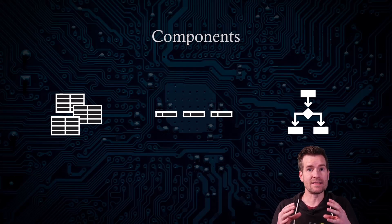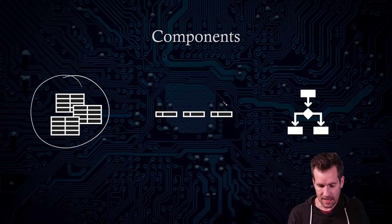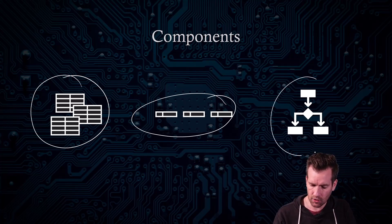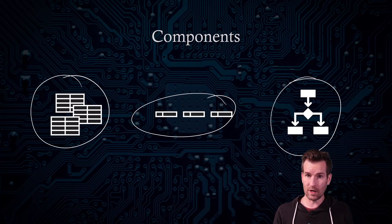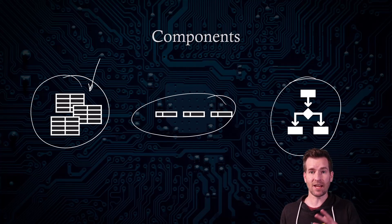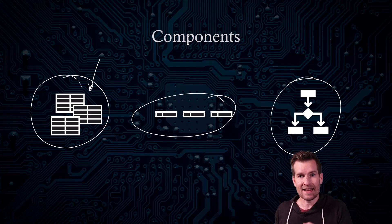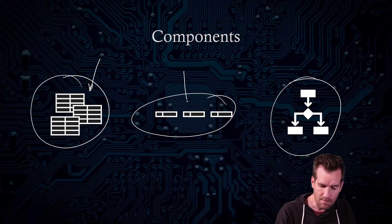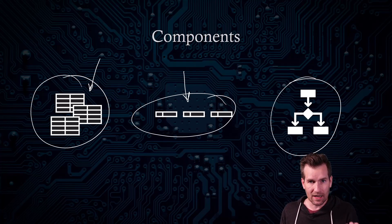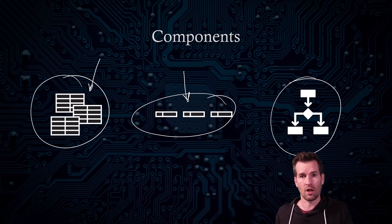There are three components that make up a dynamic routing protocol. First is the data set, then we have the messages, and then we have the algorithm it uses to determine how to interpret the data. For RIP, it has a different set of tables and databases than something like OSPF or EIGRP would use. Same thing with the messages — how messages get transferred back and forth between devices looks quite different depending on what routing protocol you use.